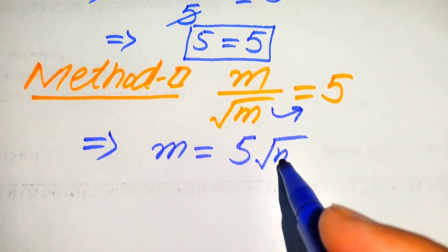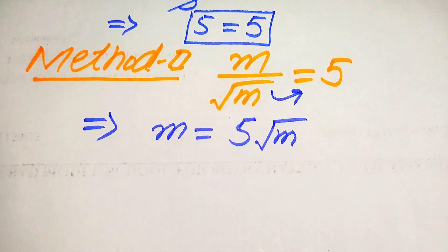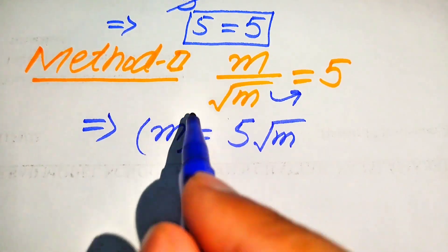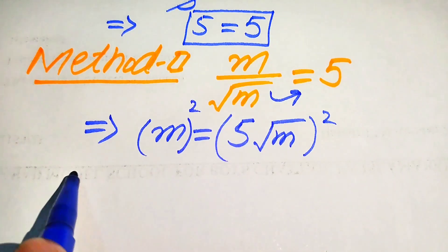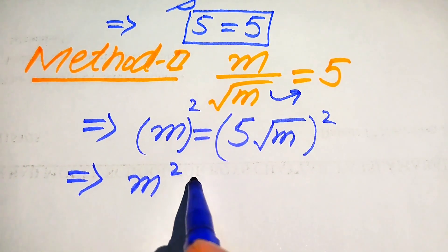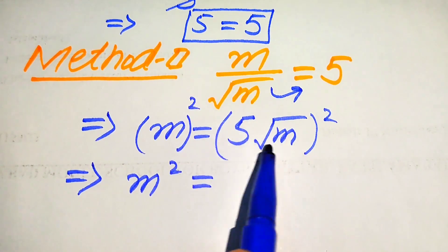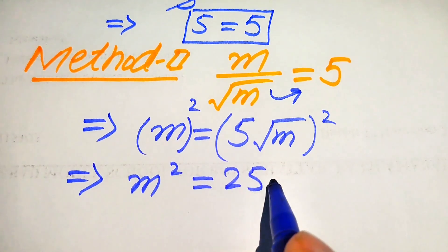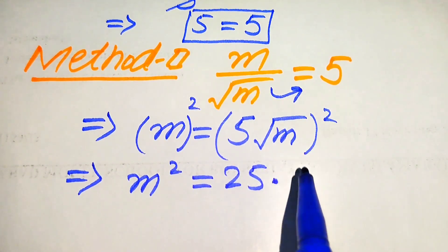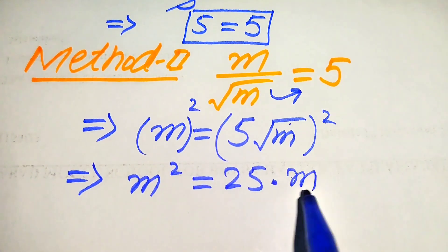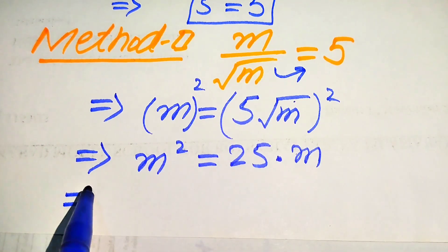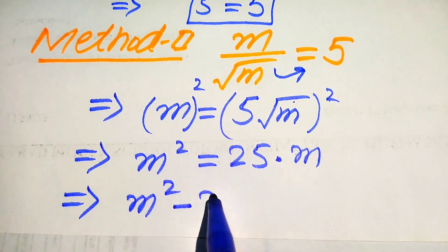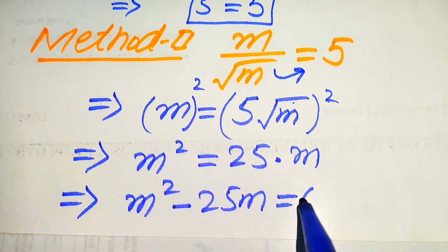To remove the square root sign, we square both sides. The left-hand side becomes m squared, and on the right-hand side we square 5 and square root of m separately: 5 squared equals 25, and square root of m whole squared gives m. So we have m squared equals 25m. Moving terms to the left-hand side gives m squared minus 25m equals 0.